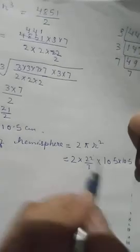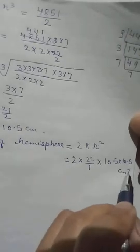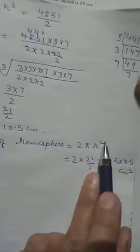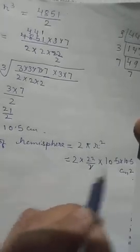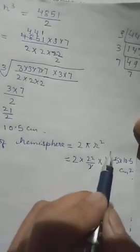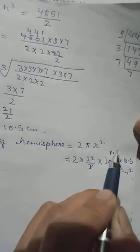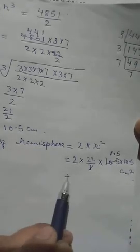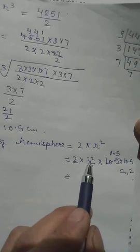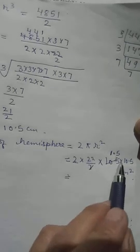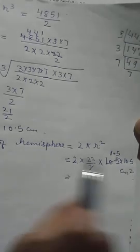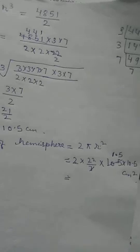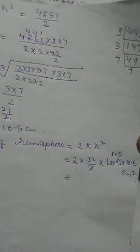Here 7 you can divide, 7 into 105 is 15. So now you multiply 2 × 22 × 1.5 × 10.5. After you multiply, that will be the answer. Please complete it yourself.